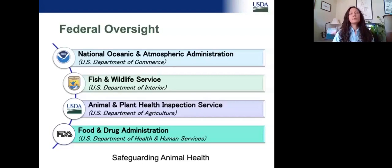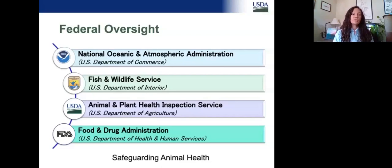The first group is NOAA — the National Oceanic and Atmospheric Administration — under the U.S. Department of Commerce. The second group is the Fish and Wildlife Service, under the U.S. Department of the Interior. Then we have APHIS — Animal and Plant Health Inspection Service — with the U.S. Department of Agriculture. That's our group. And then Food and Drug Administration, which is under the U.S. Department of Health and Human Services.